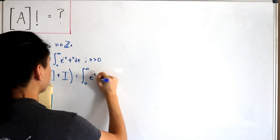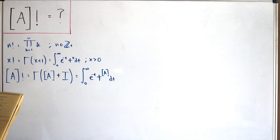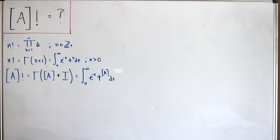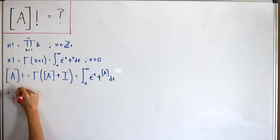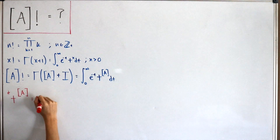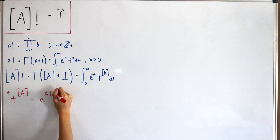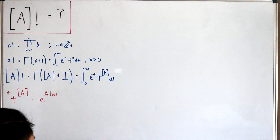We can rewrite t to the power of matrix A using the relationship between the exponential and the natural log. So t to the power of matrix A equals e to the power of A times ln(t). Using this, we can then write this in the form of a power series expansion.